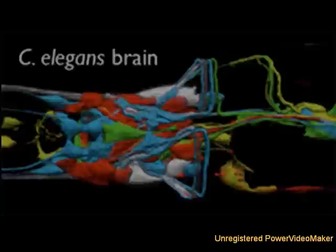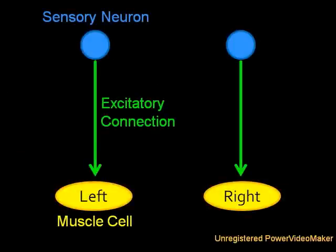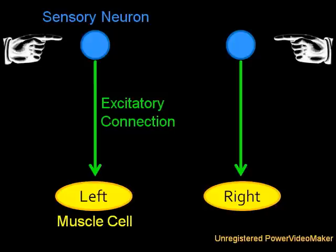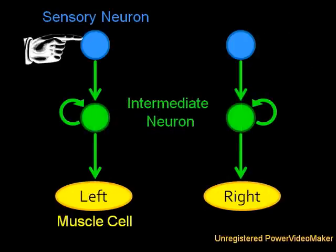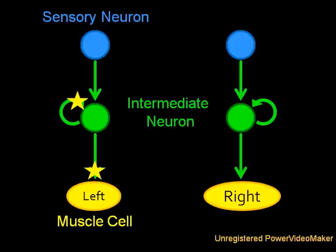Here we see two simple input-output circuits. An input to the left results in the left muscle contracting. An input to the right results in the right muscle contracting. Now let's add an intermediate neuron that also happens to synapse onto itself. Now, an input on either side not only causes that muscle to contract, but because the intermediate neuron continues to excite itself, the muscle remains contracted.